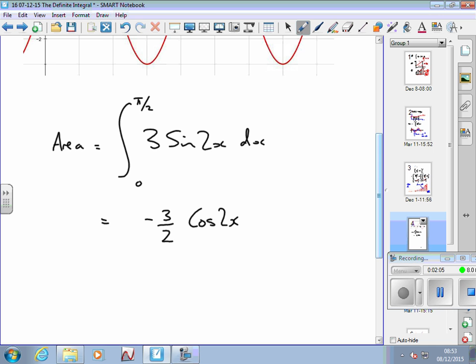Normally I'd put plus c, but because it's a definite integral, I just leave it like that. So it's a definite integral, so I put a square bracket round it and put my limits in, 0 and π over 2.